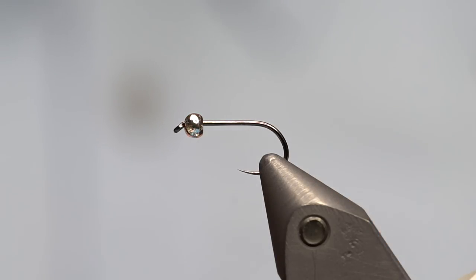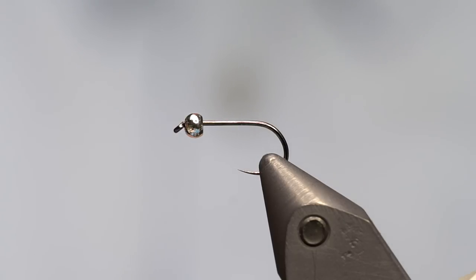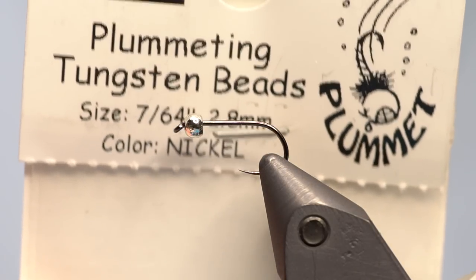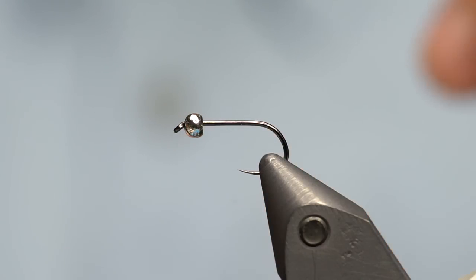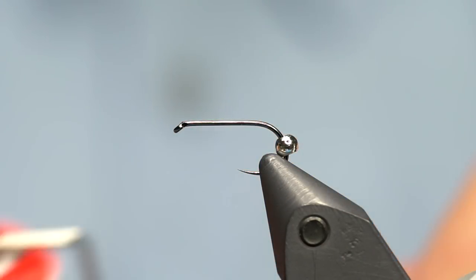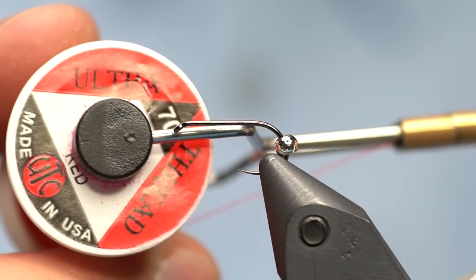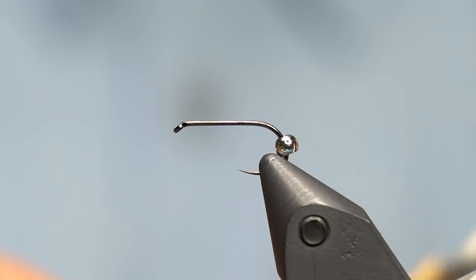So I tie them on this hook. I think if you try it you'll like this one as well. I've got a 2.8 or 7/64 inch, 2.8 millimeter tungsten bead in nickel on that size 12-230, and I'm going to use UTC 70 in red for the thread.